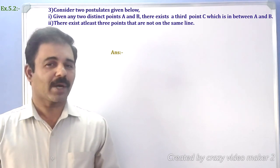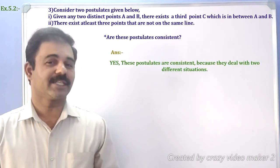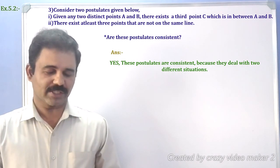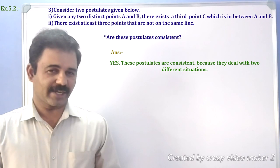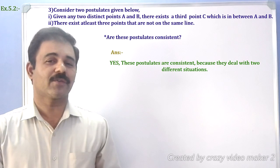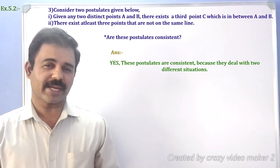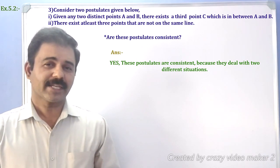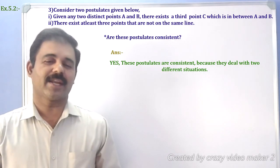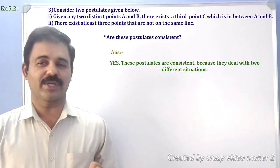Are the postulates consistent? Yes, the postulates are consistent because they deal with two different situations. First situation: given two points A and B, there exists a point C that lies between A and B. In the second statement: given two points A and B, there exists a third point C which does not lie on the same straight line. The given postulates are consistent.